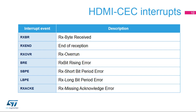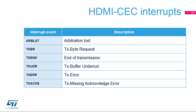Here is an overview of HDMI CEC reception interrupt events. An interrupt can be produced during reception if a receive block transfer is finished or if a receive error occurs. Here is an overview of HDMI CEC transmission interrupt events. An interrupt can be produced during transmission if a transmission block transfer is finished or if a transmit error occurs.